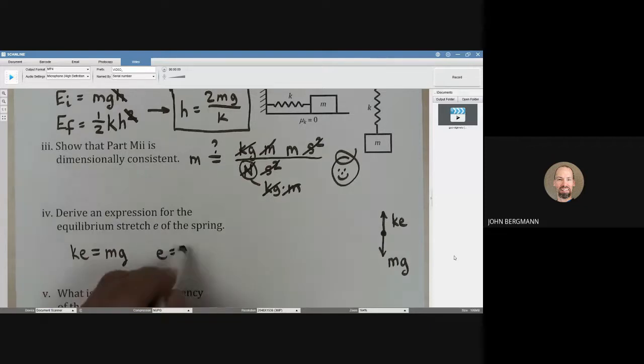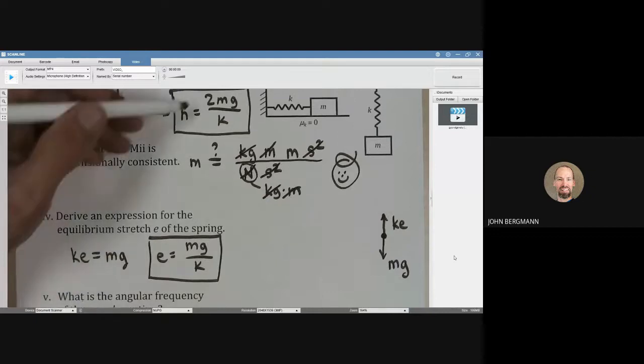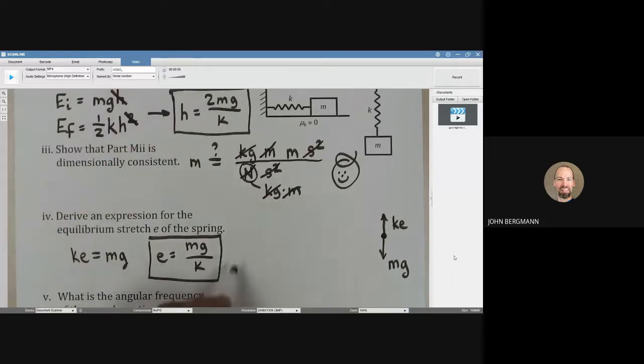We could say it's M G over K, which is fine. If we wanted to, we could say, well, you see at the top of the screen, H is 2 M G over K. So another way we could write E would be it's one half of H, isn't it? Depending on what we're given in the problem, that would determine how we report our answer.